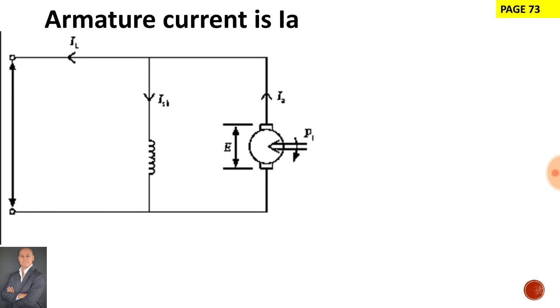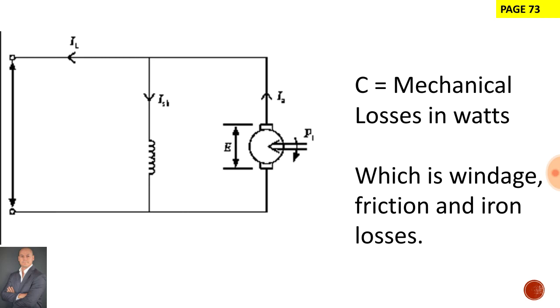To simplify we can say that our armature current is represented by RA and our no load current is represented by IO. Our mechanical losses is measured in watts and consists of windage, friction, and iron losses.